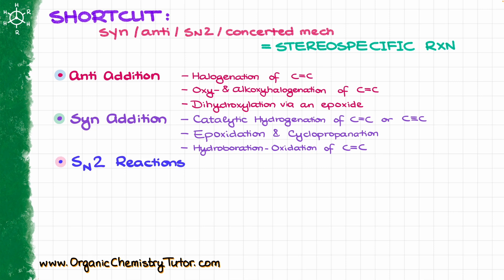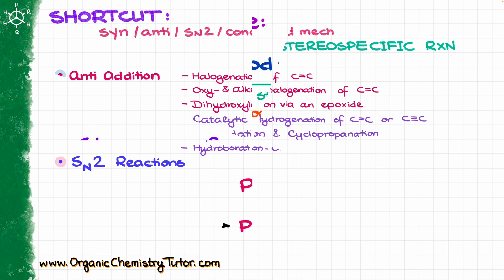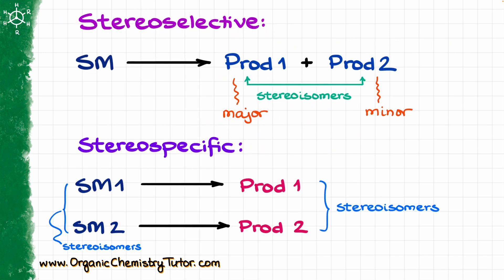And finally, of course, we have SN2 reactions. There aren't really many examples here because SN2 is, well, SN2 — but SN2 reactions are also stereospecific reactions.